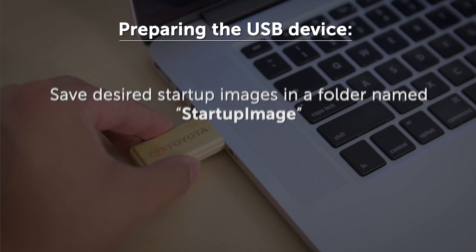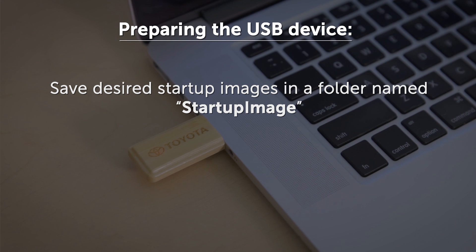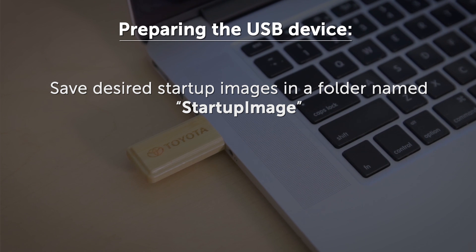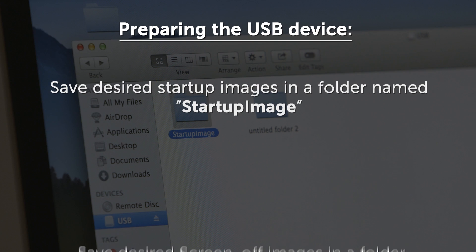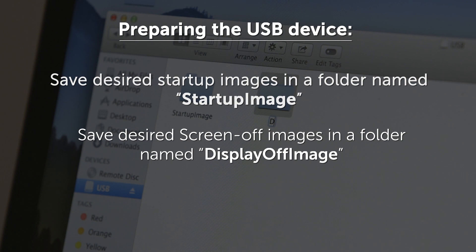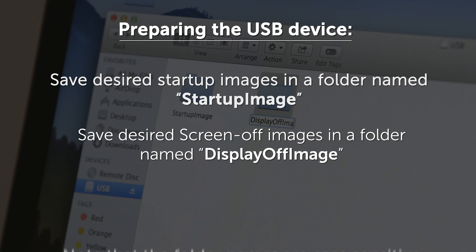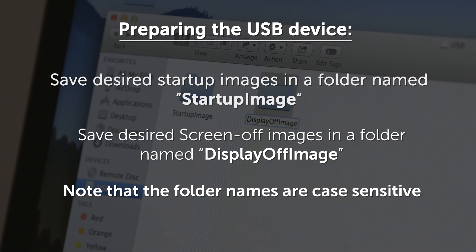The folder that the startup image is saved to on your USB device must be named 'startup image', and the folder that the screen-off image is saved to must be named 'display off image'. Note that the folder names are case sensitive.